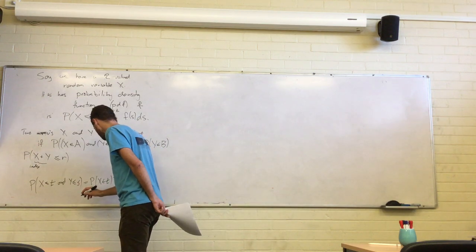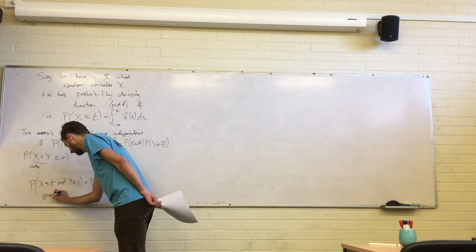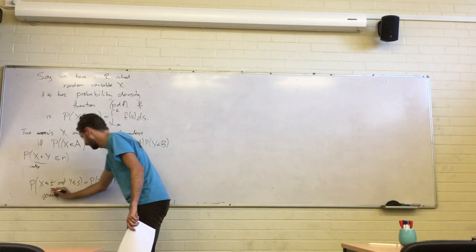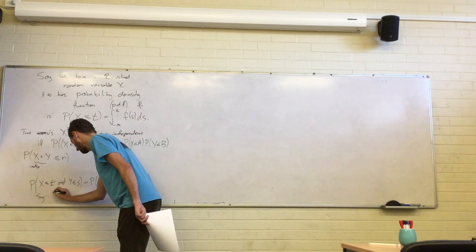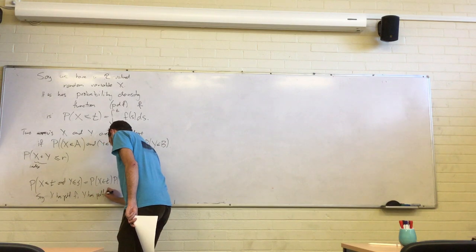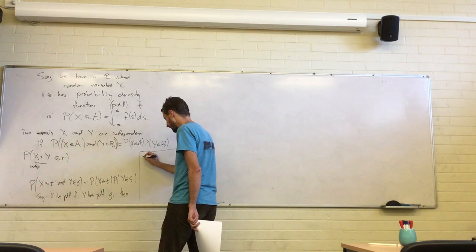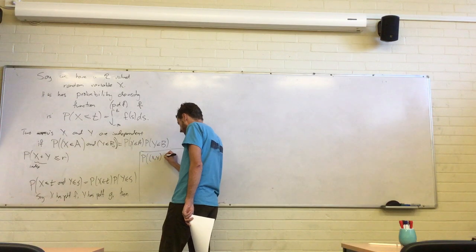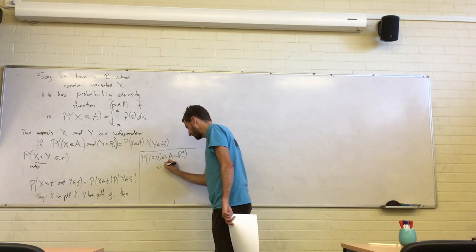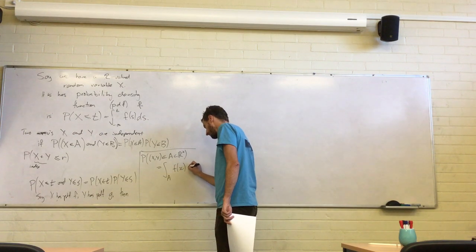Generally, if x has PDF f and y has PDF g, then the probability of the pair (x, y) being in some subset A of R² is just the double integral over A of f(x)g(y).